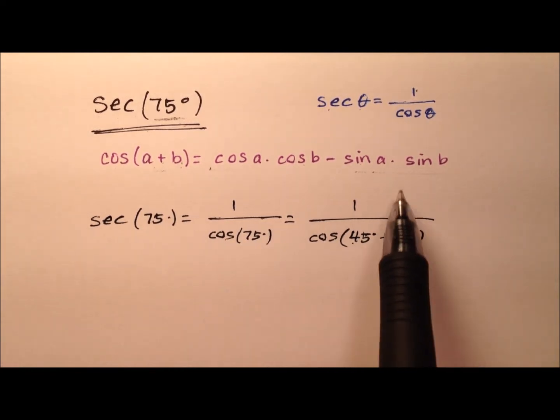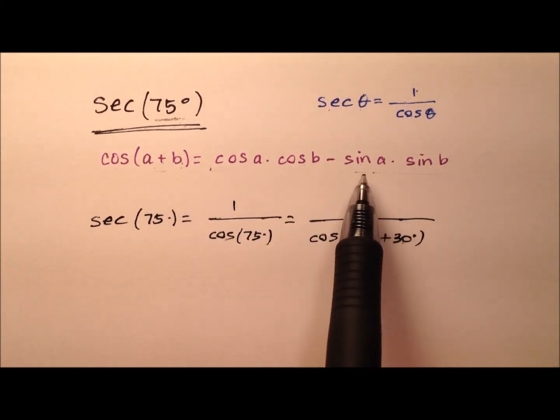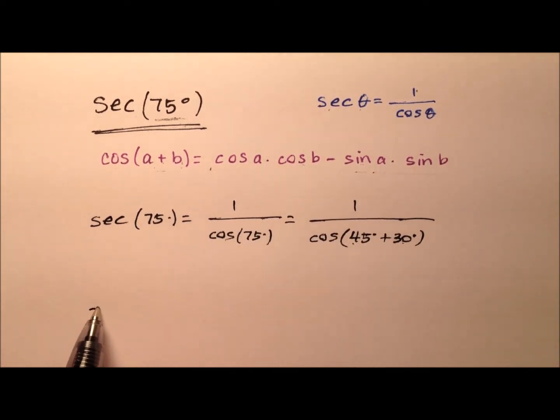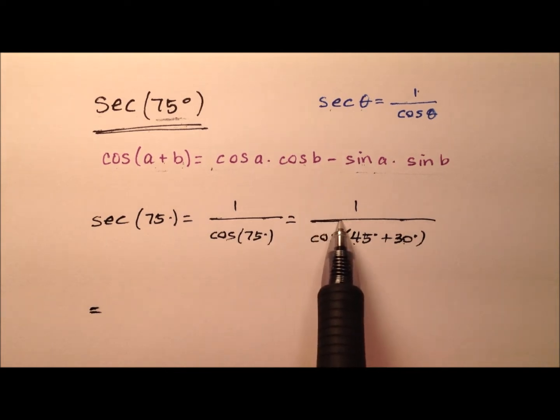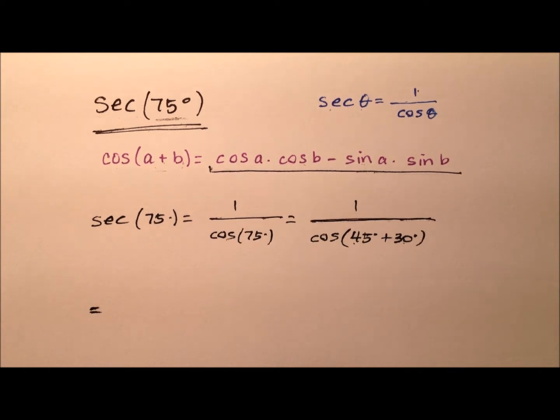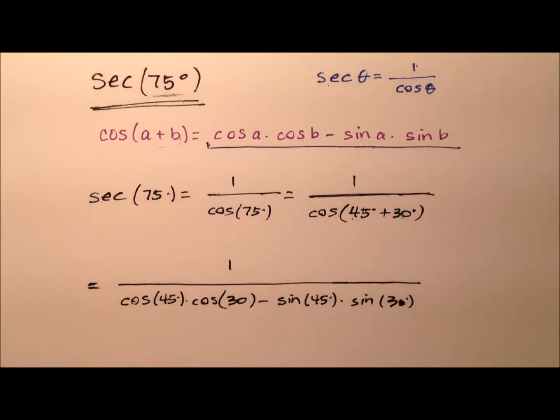And 30 and 45 are easy to work with, because we know the sine and cosine for both 30 and 45 degrees. So let's find these values using this expansion formula. We have 1 over, and it's going to be the cosine of 45 times the cosine of 30 minus the sine of 45 times the sine of 30.